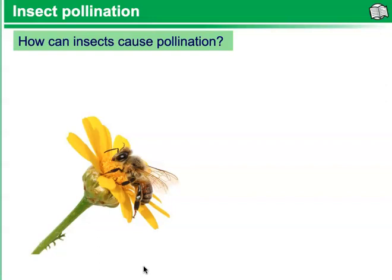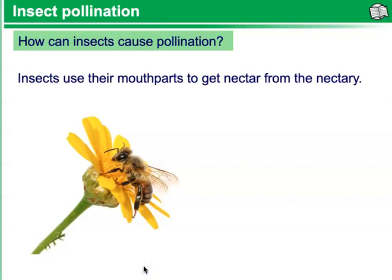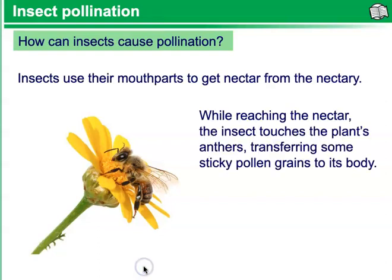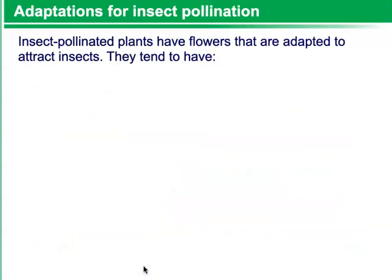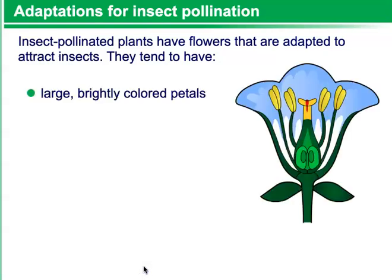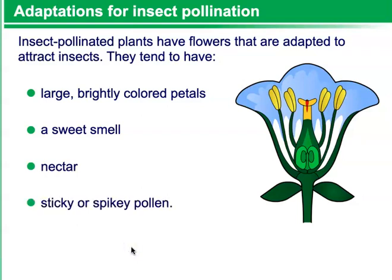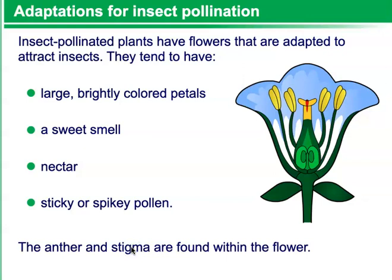Which brings us to insect pollination. How can insects cause pollination? Insects use their mouth parts to get nectar from the nectary. While reaching the nectar, the insect touches the plant's anthers, transferring some sticky pollen grains onto its body. When the insect enters another flower, some of the pollen grains on its body get brushed onto the stigma. Insect pollinated plants have flowers adapted to attract insects — they tend to have large, brightly colored petals, a very sweet smell, nectar, and sticky or spiky pollen. The anther and stigma are found within the flower.